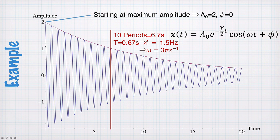The period of the oscillation, if we count 10 periods, we get to 6.7 seconds. So the period of the oscillation must be 0.67 seconds, which gives us a frequency of 1.5 hertz, or ω is equal to 3π seconds to the minus 1. So now we know the frequency, ω.